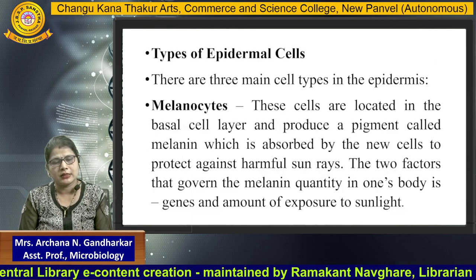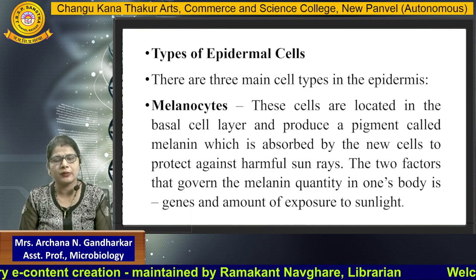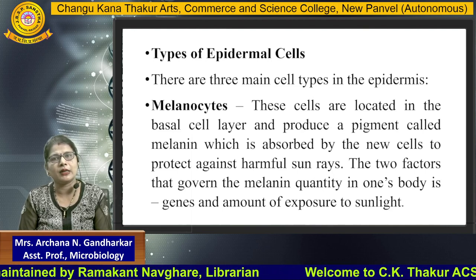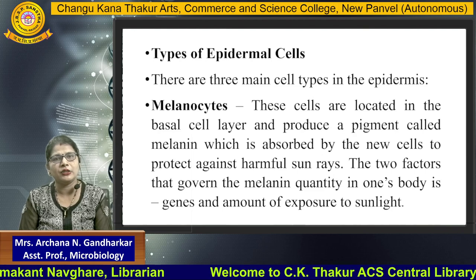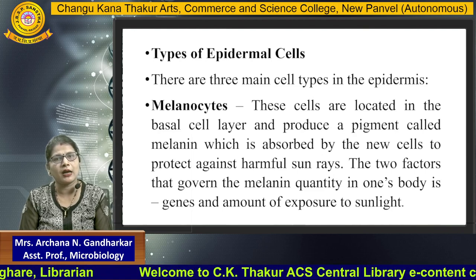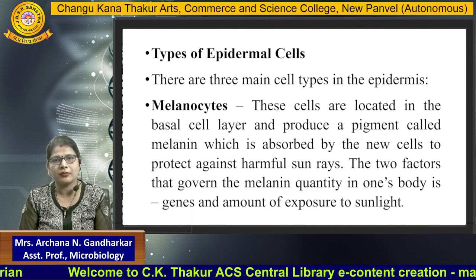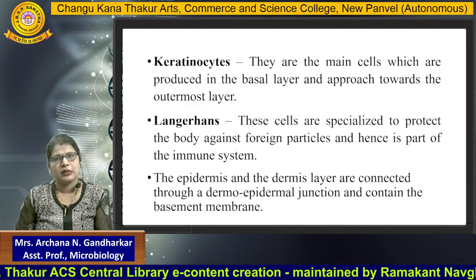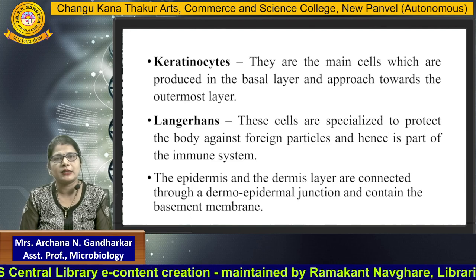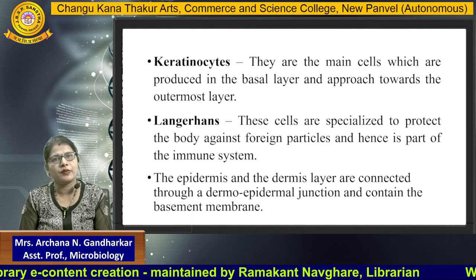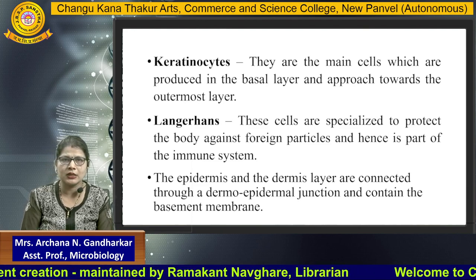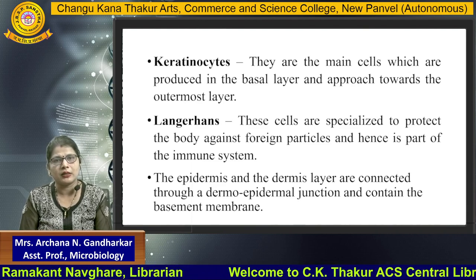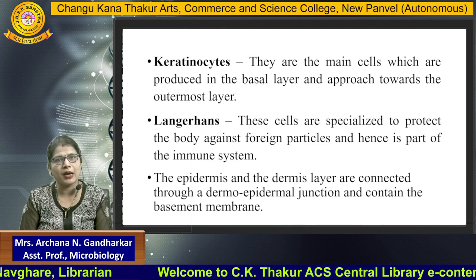There are three main types of cells present in the epidermis. First is the melanocytes — these cells are located in the basal cell layer and produce a pigment called melanin. This melanin is absorbed by new cells and protects against harmful sunlight. The two factors that govern the melanin quantity in the body are genetics and the amount of exposure to sunlight. Second, keratinocytes are the main cells produced in the basal layer and move towards the outer layer. Third are the Langerhans cells, which are specialized to protect the body against foreign particles and are hence part of the immune system.